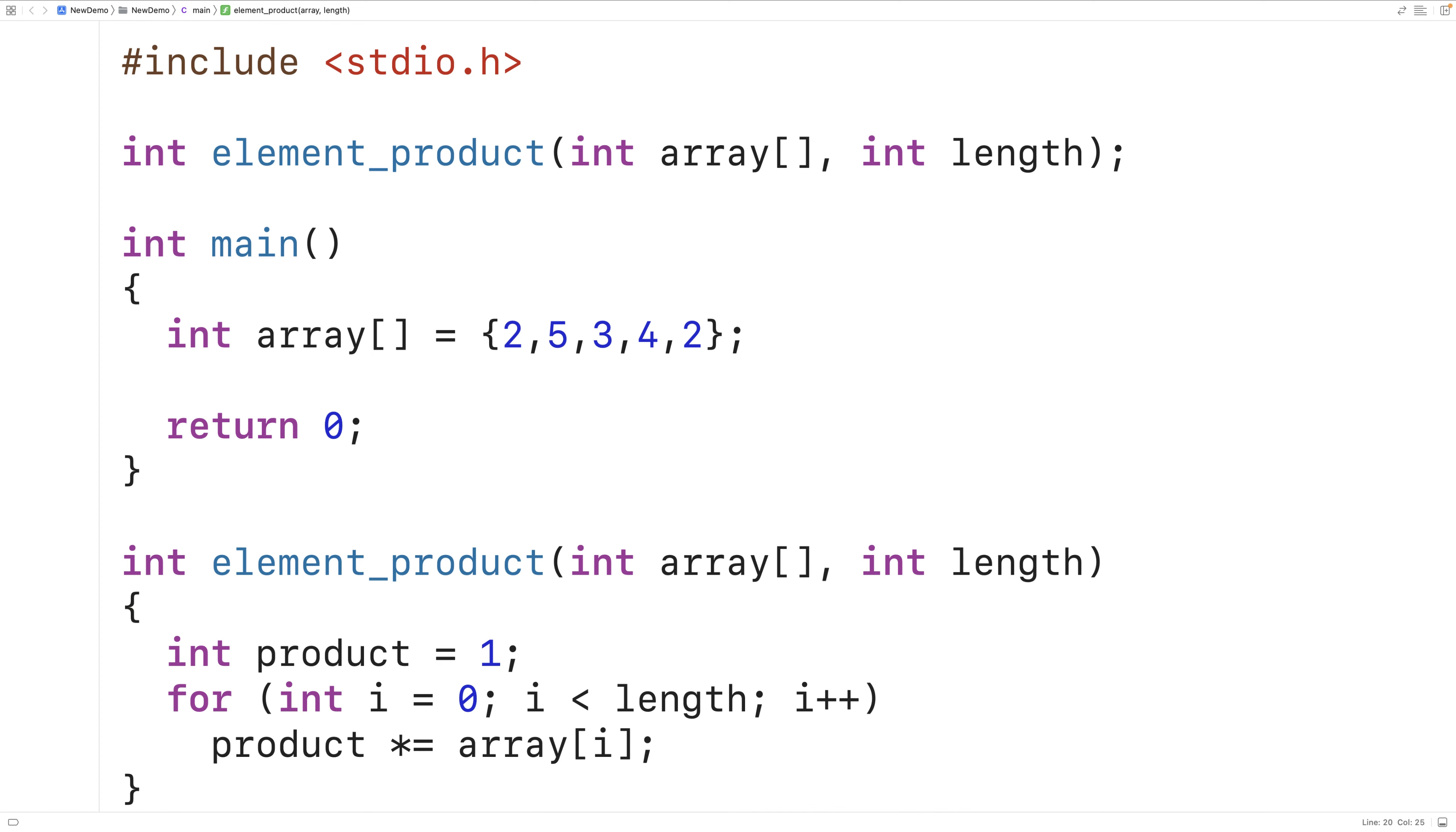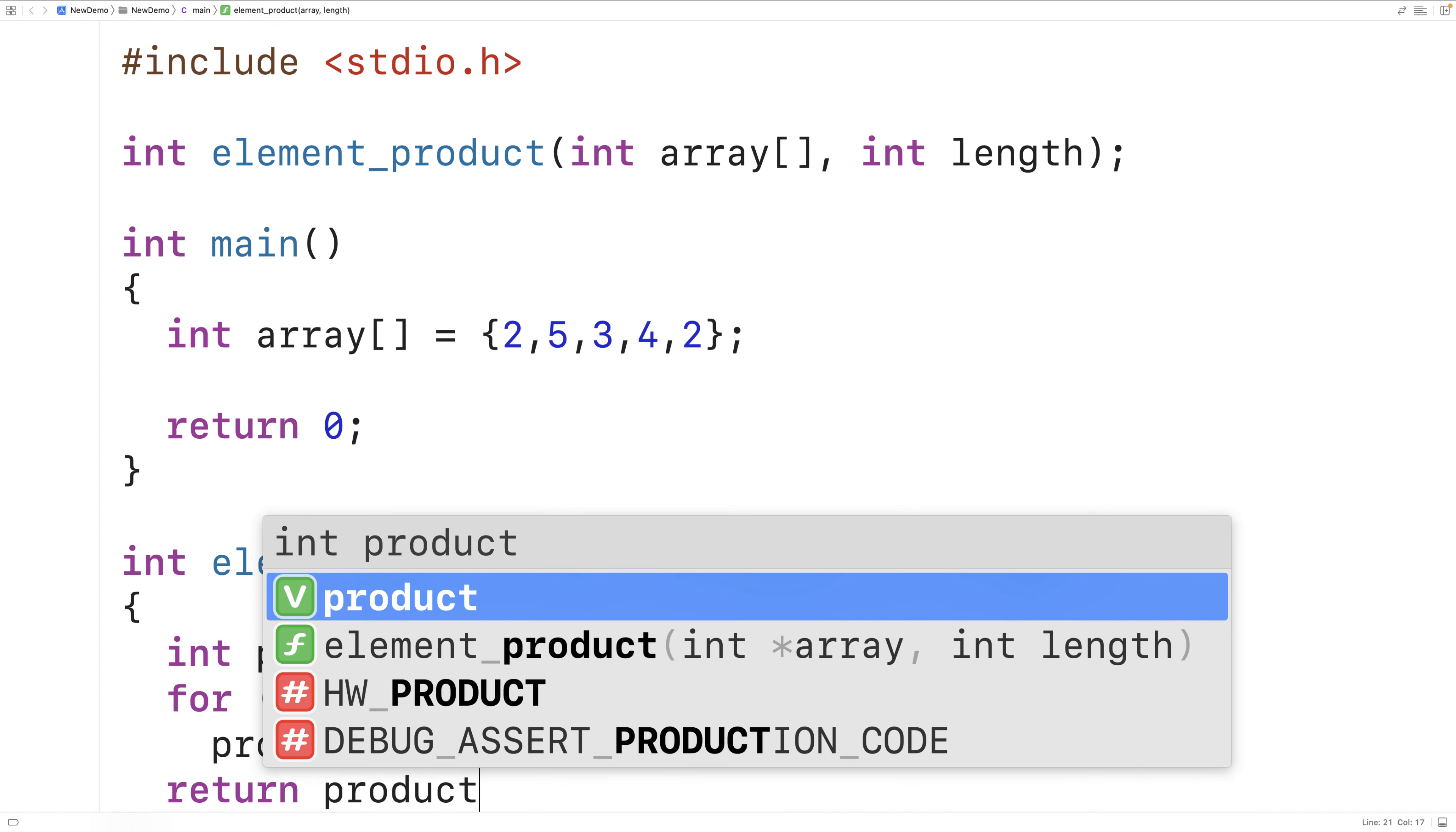Then when the loop is done, we'll have multiplied all the array elements and we can just return the product.